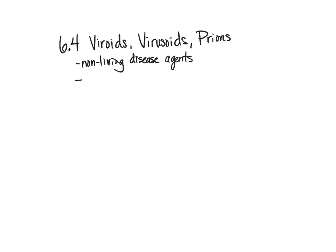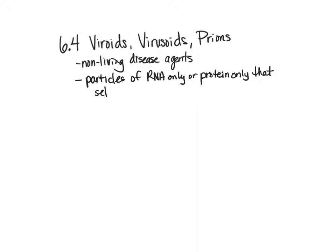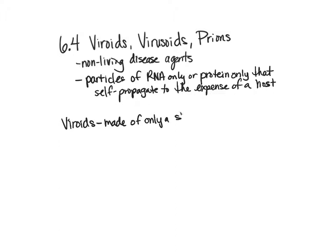When we're talking about viroids, virusoids, and prions, we're talking about particles of RNA only or protein only that self-propagate at the expense of a host. So let's start with viroids. Viroids are made of only a short circular RNA — that is it.